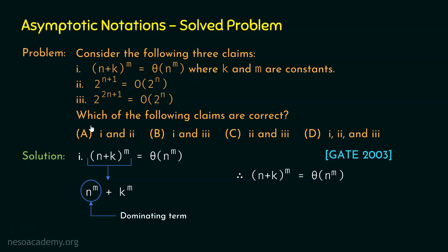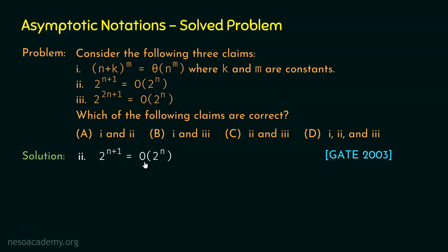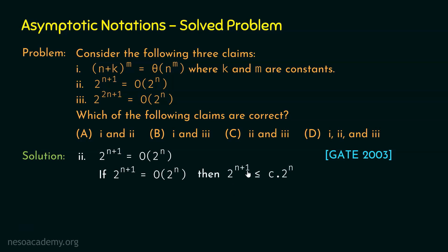Now let's move to claim 2, which says 2^(n+1) is O(2^n). According to the definition of Big O notation, if f(n) is O(g(n)), then f(n) must be less than or equal to c·g(n) for some c > 0 and for all n ≥ n₀. Assuming f(n) = 2^(n+1) and g(n) = 2^n, we need 2^(n+1) ≤ c·2^n to be true.